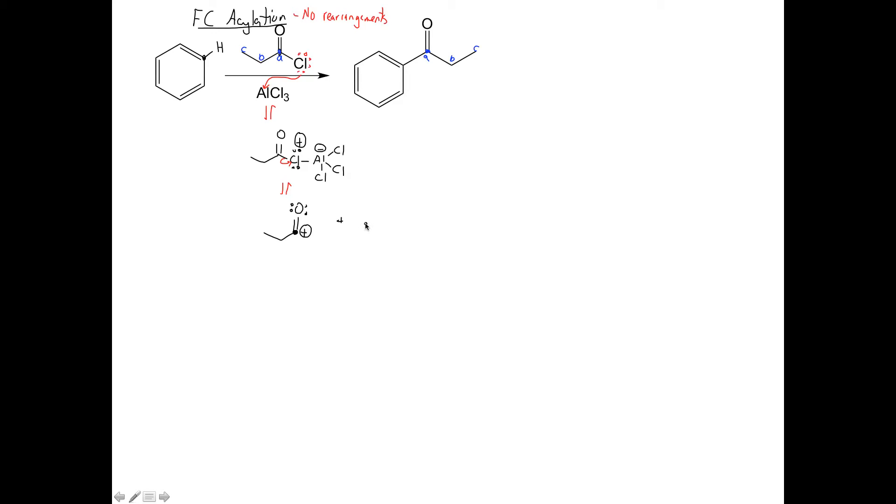Also, the other species that we make is AlCl4, AlCl4 minus. And we can remember that that's in equilibrium with AlCl3 plus a Cl minus. And we're going to use this Cl minus later to do our deprotonation.